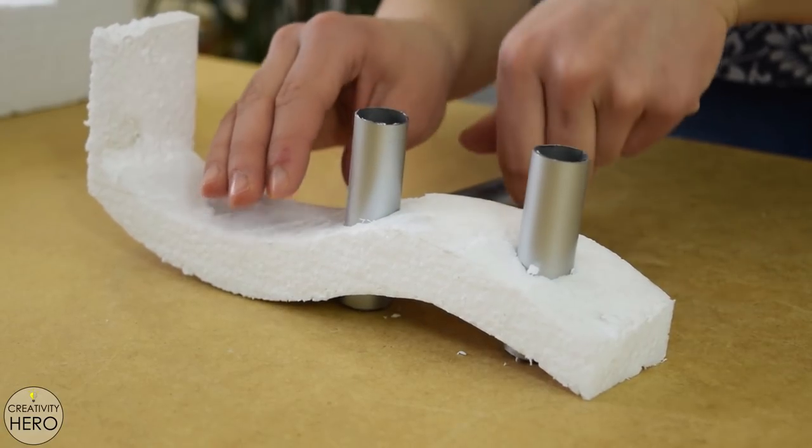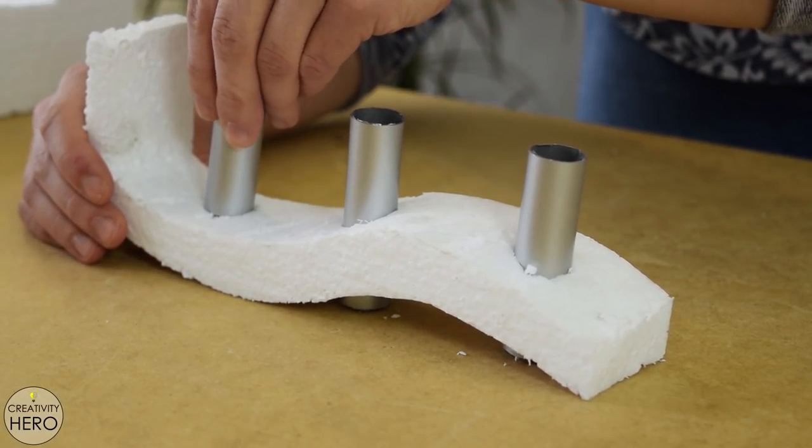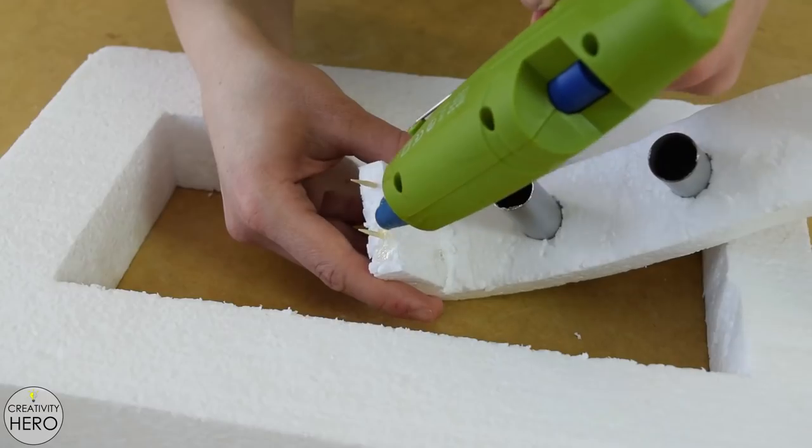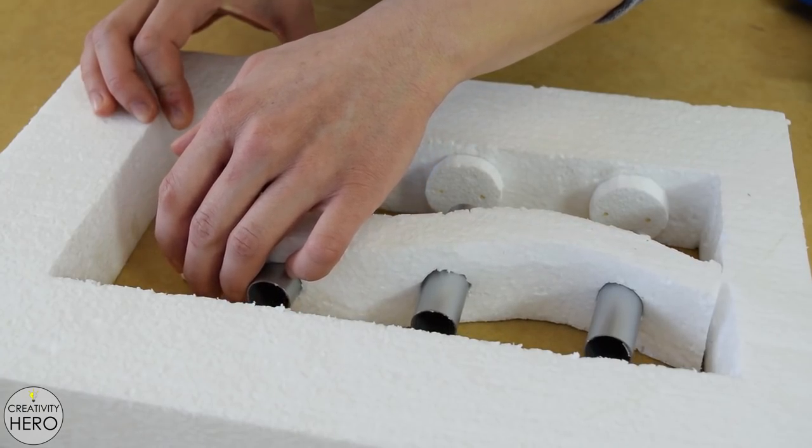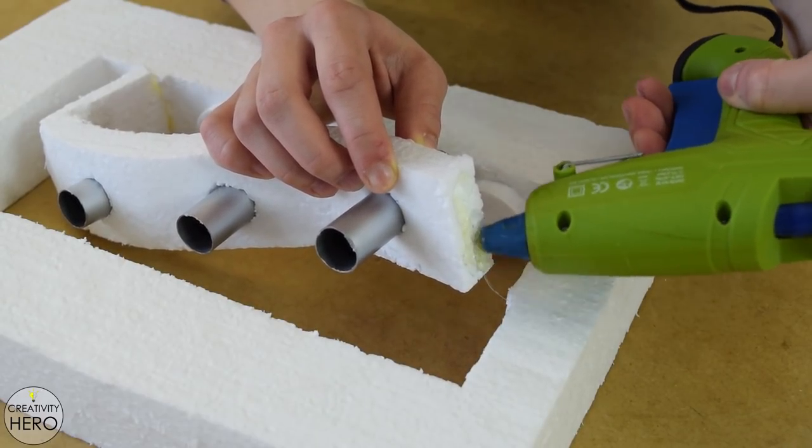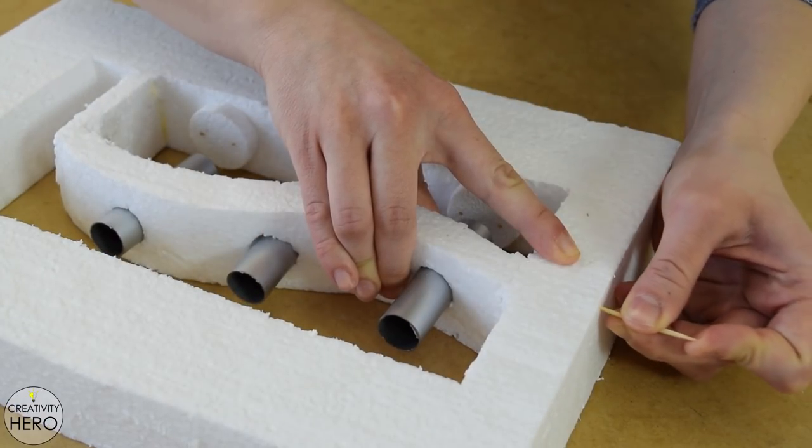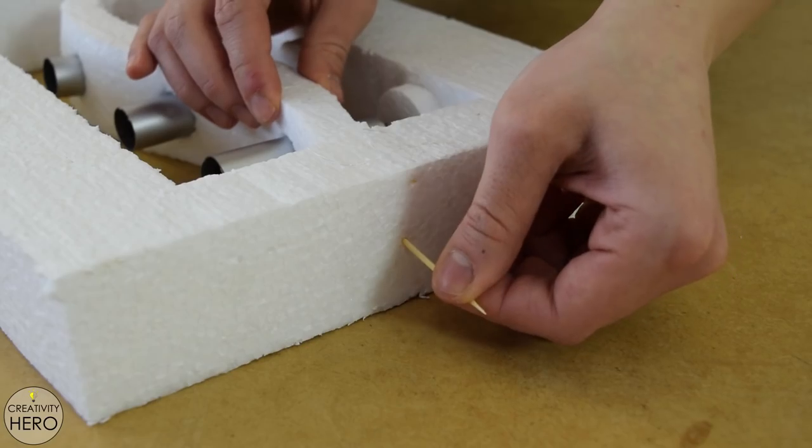Before gluing the middle I inserted the aluminum pipes inside the holes that I previously made and then hot glued it in place. Here I also reinforced the joints with toothpicks.